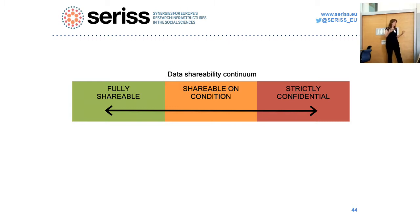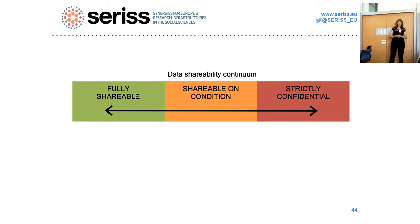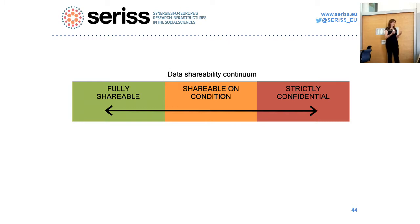There is data you cannot share for good reasons — for example copyright, or the data belongs to other people and you are not allowed to share it. Then there is fully shareable data — not sensitive, not personal — that you could just put online. And then there's a middle category: shareable on condition. This could include personal sensitive data, but it means you need to have thought about how to process it — asking for consent, anonymizing, or both. If you can fully anonymize data, you no longer need consent.